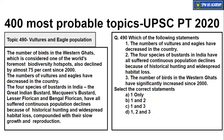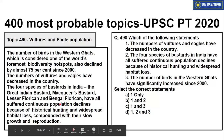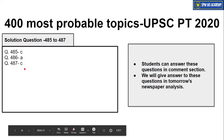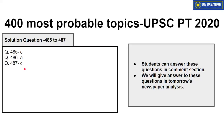Topic 490 is about vulture and eagle population decline. The number of birds in the Western Ghats — one of the world's foremost biodiversity hotspots — has declined by 75% since 2000. Vultures and eagles have decreased significantly in India. The four species of bustards in India — Great Indian Bustard, Mackeen Bustard, Lesser Florican, and Bengal Florican — have all suffered continuous population decline due to historical hunting, widespread habitat loss, and their slow growth and reproduction. Students can attempt questions 488 to 490 in the comment section. Answers to questions 485 to 487 from yesterday's analysis are shared today, and answers to today's questions will be shared in tomorrow's newspaper analysis.